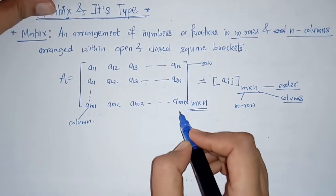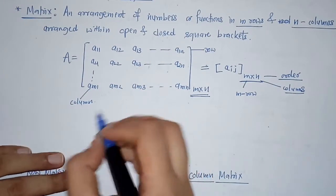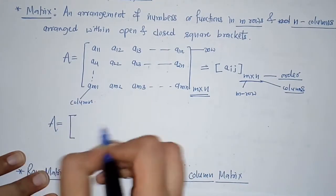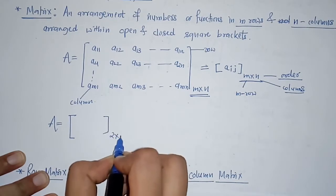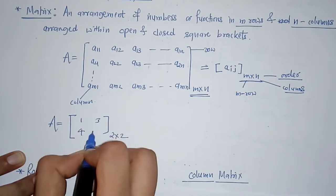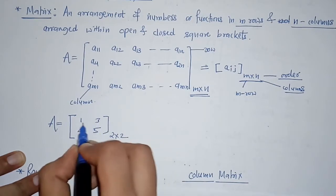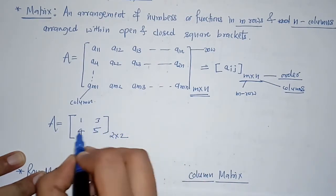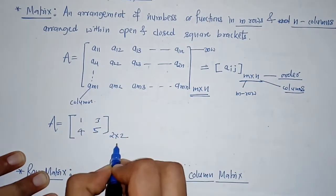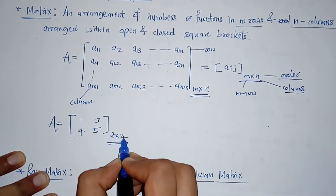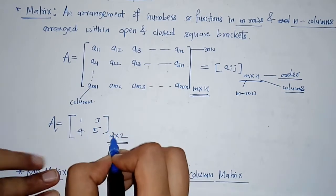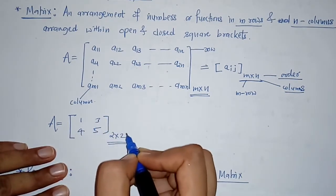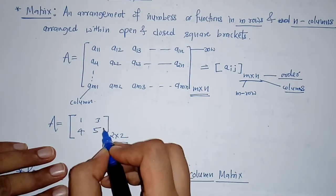Now we can take an example. If we have matrix A of order 2 by 2 with elements 1, 3, 4, 5 — here we have 2 rows and 2 columns. So this matrix is of order 2 by 2, having a total of 4 numbers, and these numbers are called the elements of this matrix.